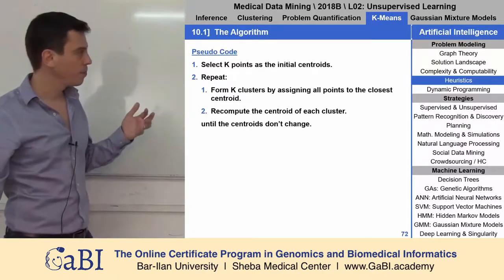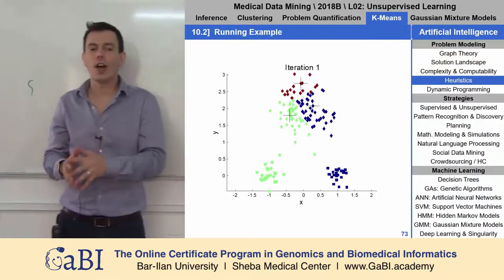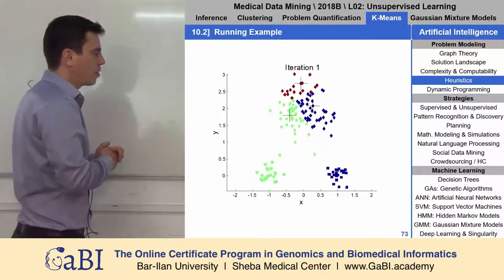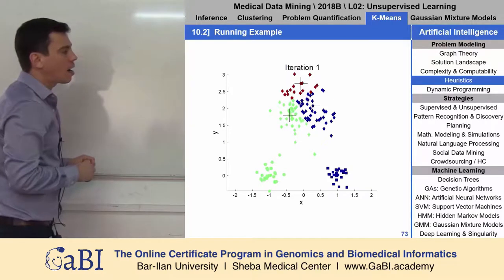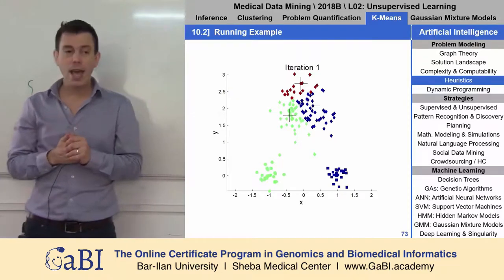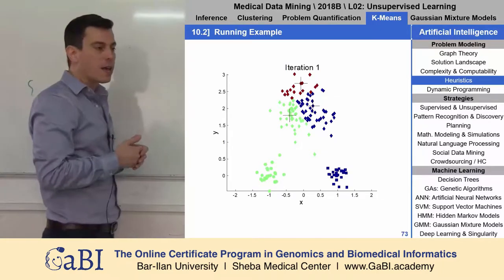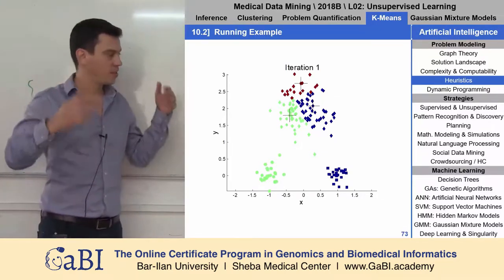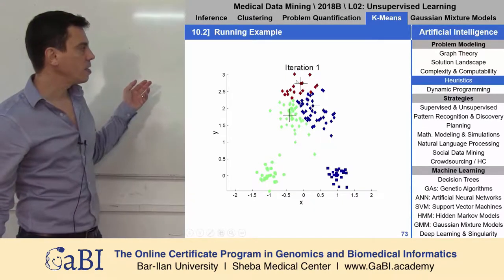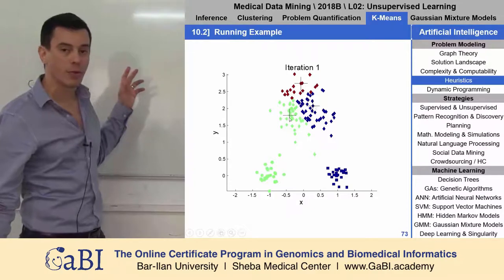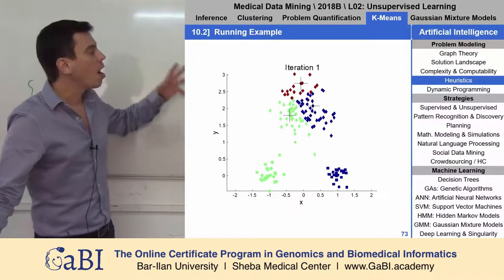Let me show you how it works. Let's say we have only two variables, X and Y, and all the patients are shown in this plot. K is three, so we pick just three random places — three random centroids: centroid number one, centroid number two, centroid number three. Then we form the clusters around those centroids.